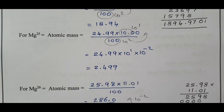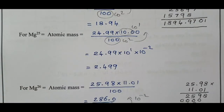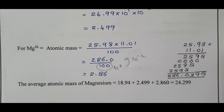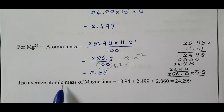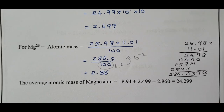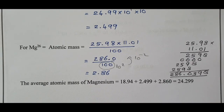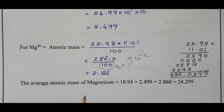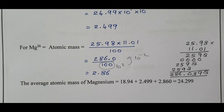Now when we sum up all three values — 18.94, 2.499, and 2.86 — the average atomic mass of magnesium is 24.299. This is the correct relative average atomic mass of magnesium. This completes question number 34.